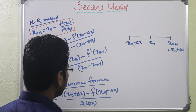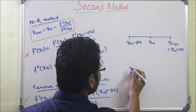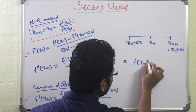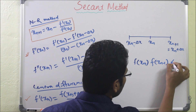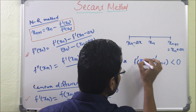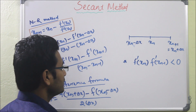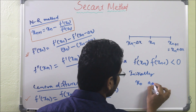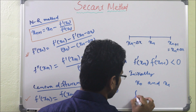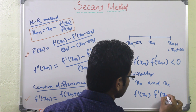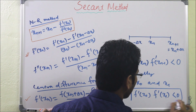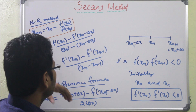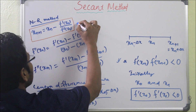One important condition to remember: whenever we are finding the value, we have to check that f'(X(n)) times f'(X(n-1)) is less than zero. That means if we have initially two points X0 and X1, we must check that f'(X0) times f'(X1) is less than zero, and this condition must be checked throughout all iterations.